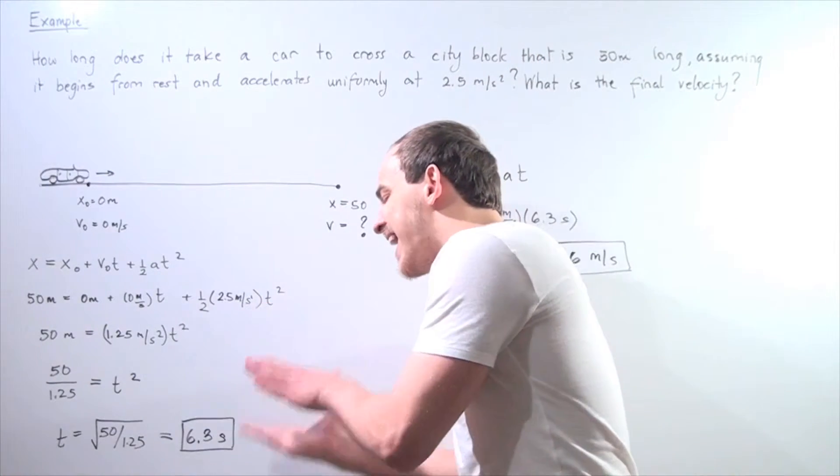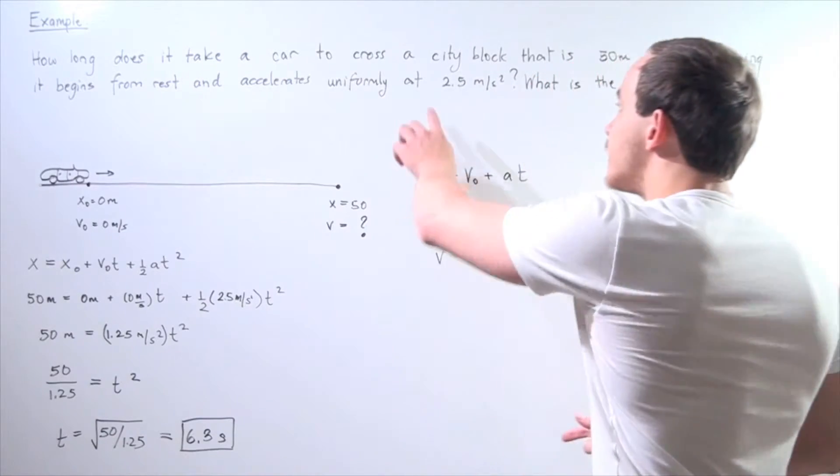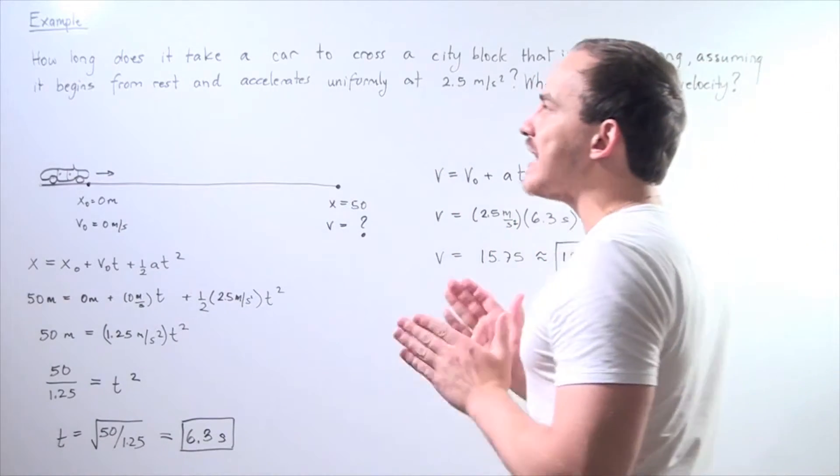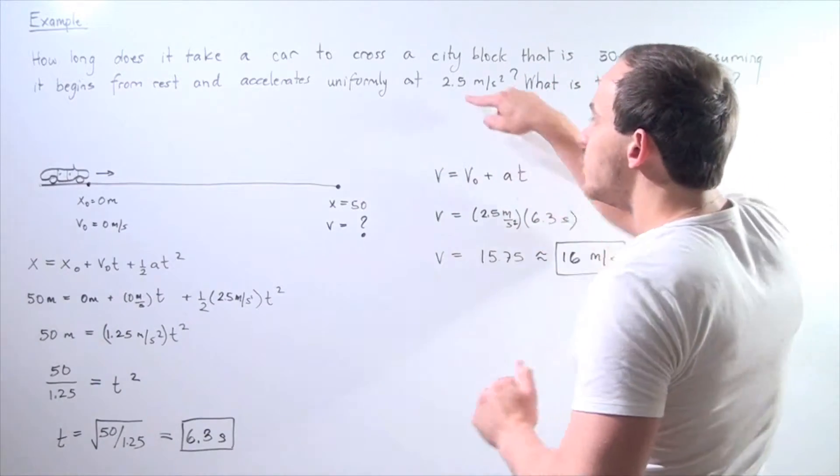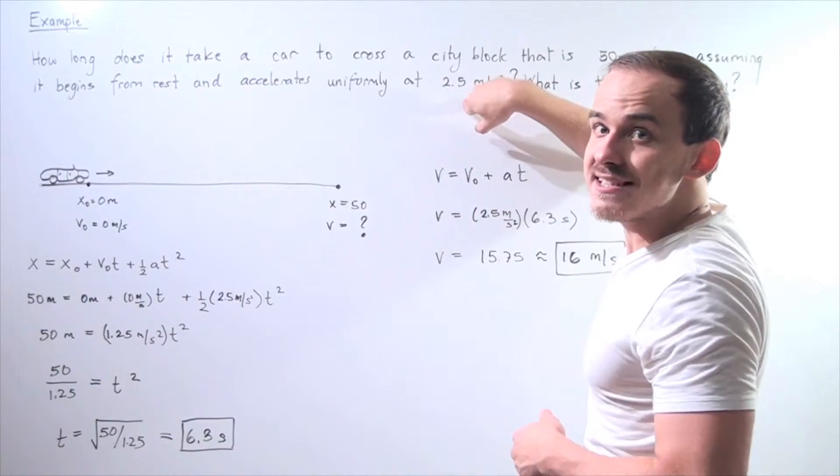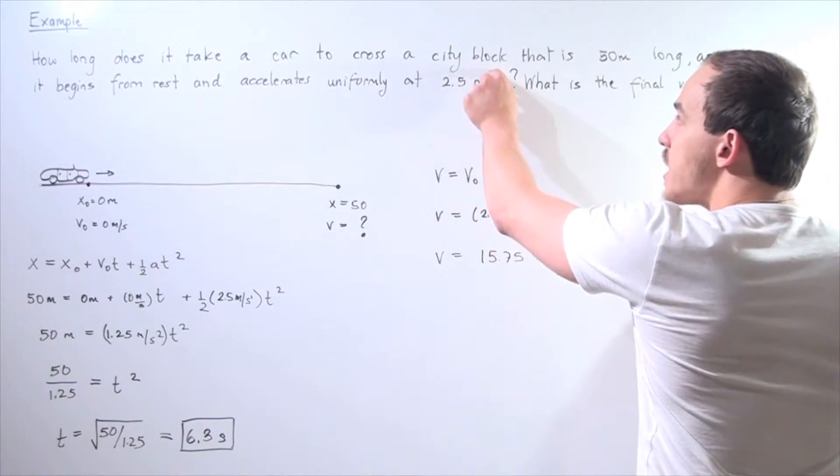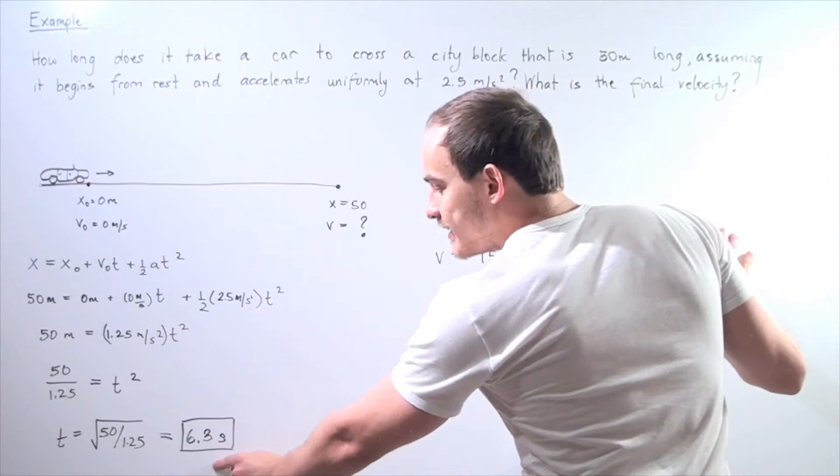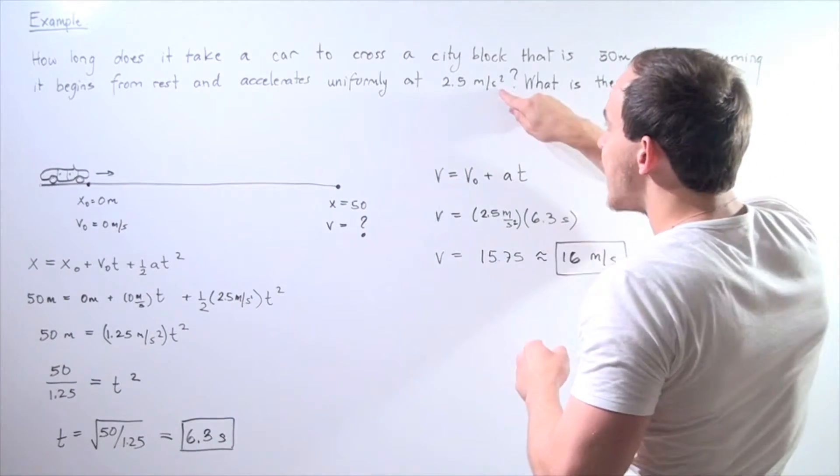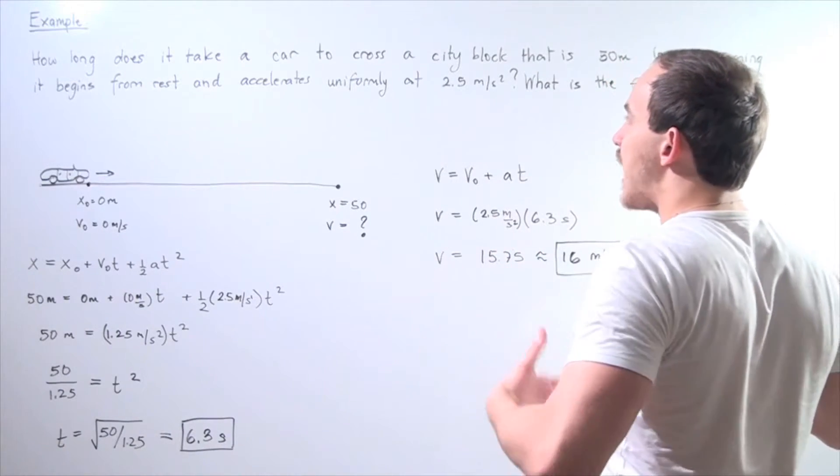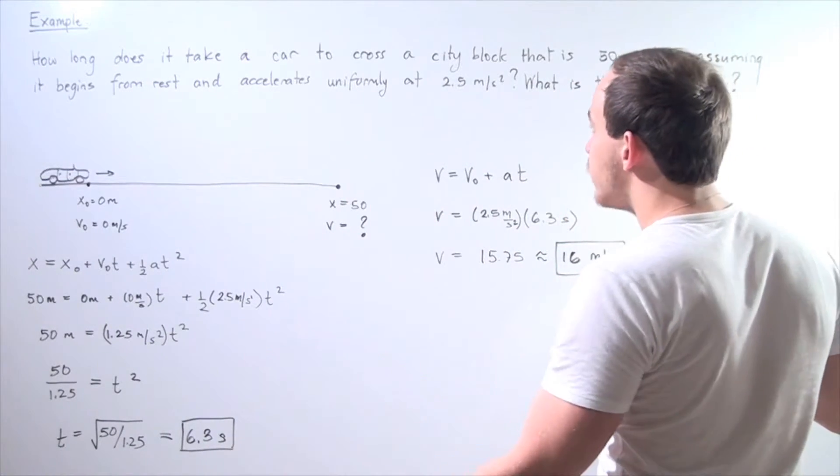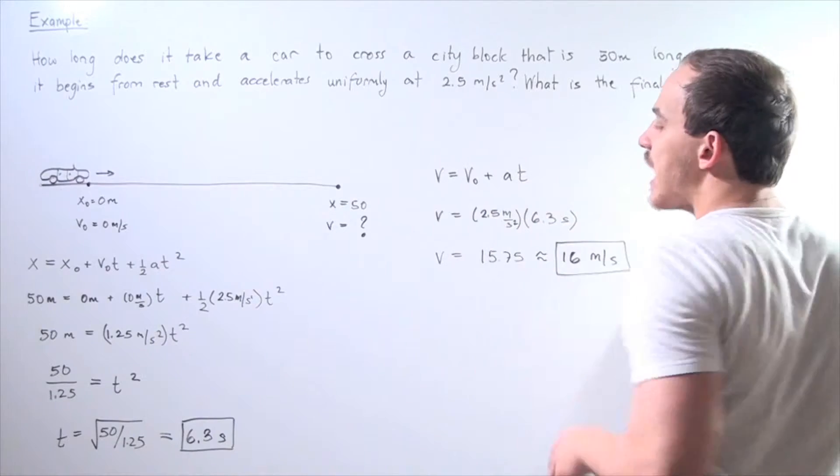Now, knowing this time and knowing our acceleration, we can find our velocity by simply multiplying these two guys out. Why? Well, because we have meters per second squared and we have seconds. If you multiply them out, one of the seconds cancels and we're left with our value of final velocity in meters per second.